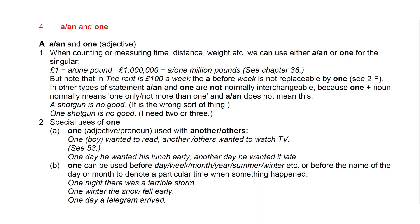In other types of statements, A or AN and ONE are not normally interchangeable, because ONE plus the noun usually means 'one only' or 'no more than one', whereas A or AN do not specifically mean that. For example, 'a shotgun is no good' implies the shotgun is the wrong object, whereas 'one shotgun is not good' implies one is not sufficient and you require more than one.